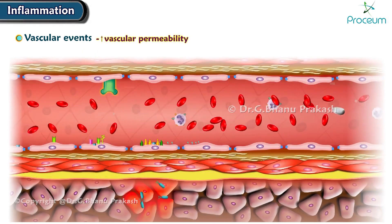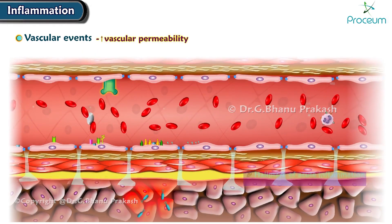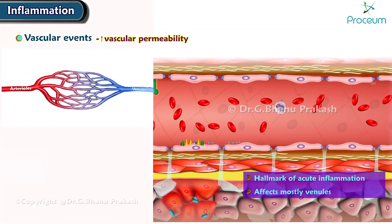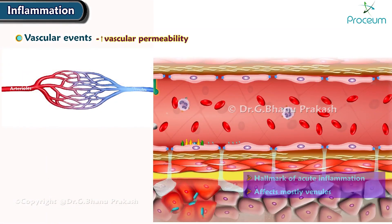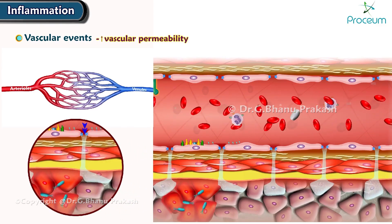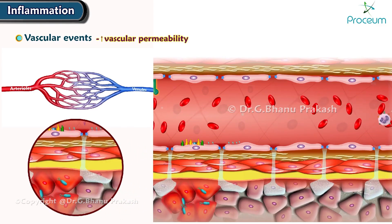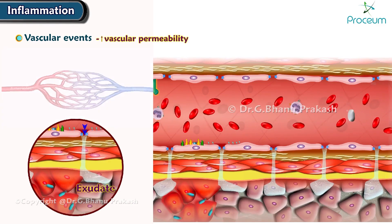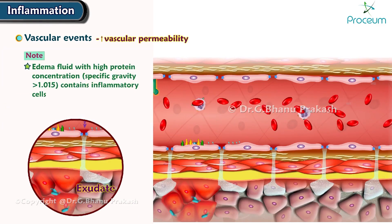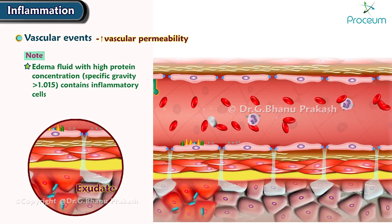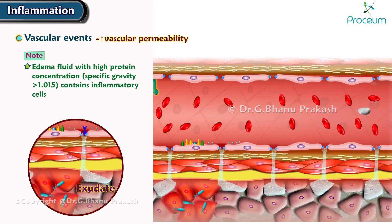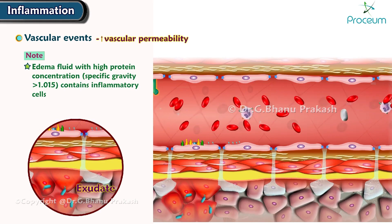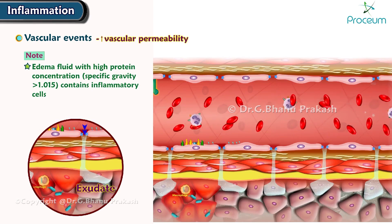Lastly, there's increased vascular permeability. This is the hallmark of acute inflammation. It mostly affects venules and occurs due to the formation of endothelial gaps. This leads to the formation of a protein-rich fluid known as exudate. An exudate is an edema fluid with a high protein concentration and a specific gravity of greater than 1.015, which frequently contains inflammatory cells.